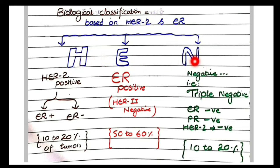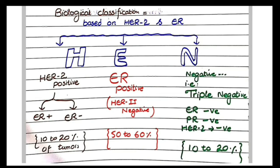In HEN, E stands for ER positive. About 50 to 60 percent of breast cancers are ER positive, and importantly, when a breast cancer is ER positive it usually implies it is HER2 negative. So ER positive/HER2 negative is the most common type. The second category, H, stands for HER2 positive — meaning over-amplification of the HER2 gene. HER2 positive cancers can be either ER positive or ER negative.